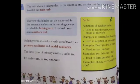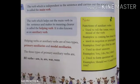The verb which is independent in the sentence and carries out the meaning of its own is called the main verb. The verb which helps out the main verb in the sentence and makes its meaning clearer is called the helping verb. It is also known as an auxiliary verb.